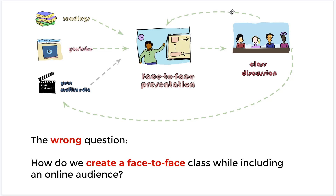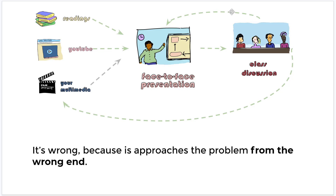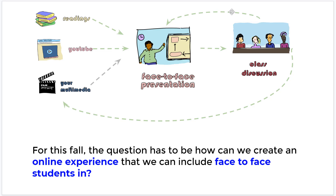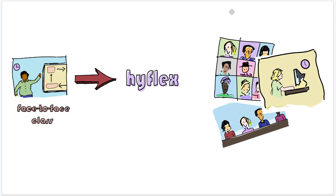People are asking: how do we create a face-to-face class while including an online audience? I think that's the wrong question. I think it's wrong because it approaches the problem from the wrong end. For this fall, the question I want to ask is: how can we create an online experience that we can include face-to-face students and asynchronous students in? Instead of going from the face-to-face class and figuring out how to HyFlex it, we're going to start with the Zoom presentation.